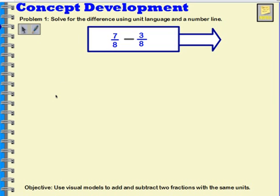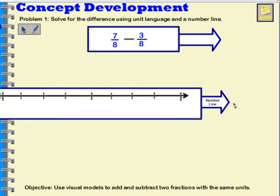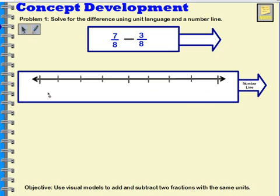Let's try another one. Let's try 7 eighths minus 3 eighths. And let's show this on our number line. So here I have a number line and I have it broken up into 8 parts.